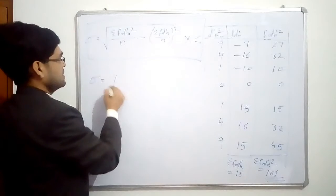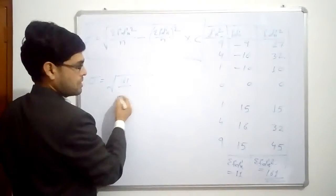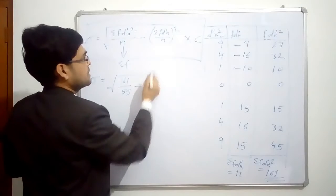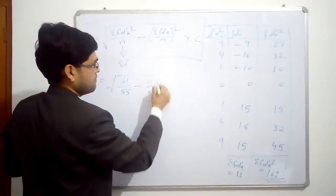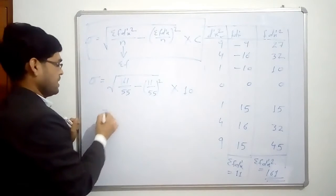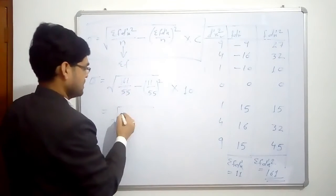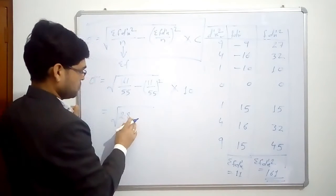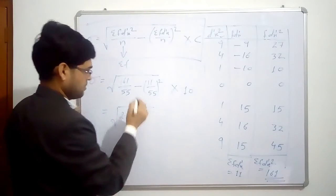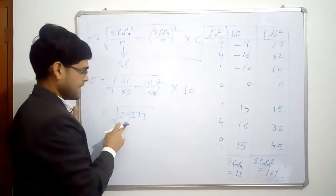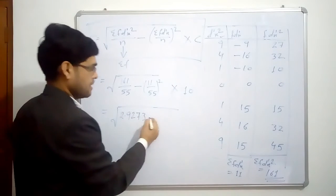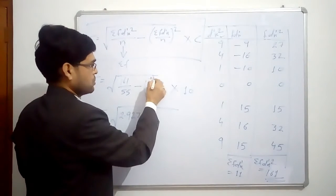So now put the values here. This is 161 upon 55, we have n as sigma f, minus this value is 11 here upon 55, square root of this one, and into common factor we have 10 out of this root. Now, square root of this divided by this gives you 2.9273. Because we have to multiply it by 10, that is why I am just taking it in 4 decimal point. Otherwise we would have to just take it in only 2 decimal point. Minus, this is 0.02. 0.02 into 0.02 becomes 0.04, and into 10.